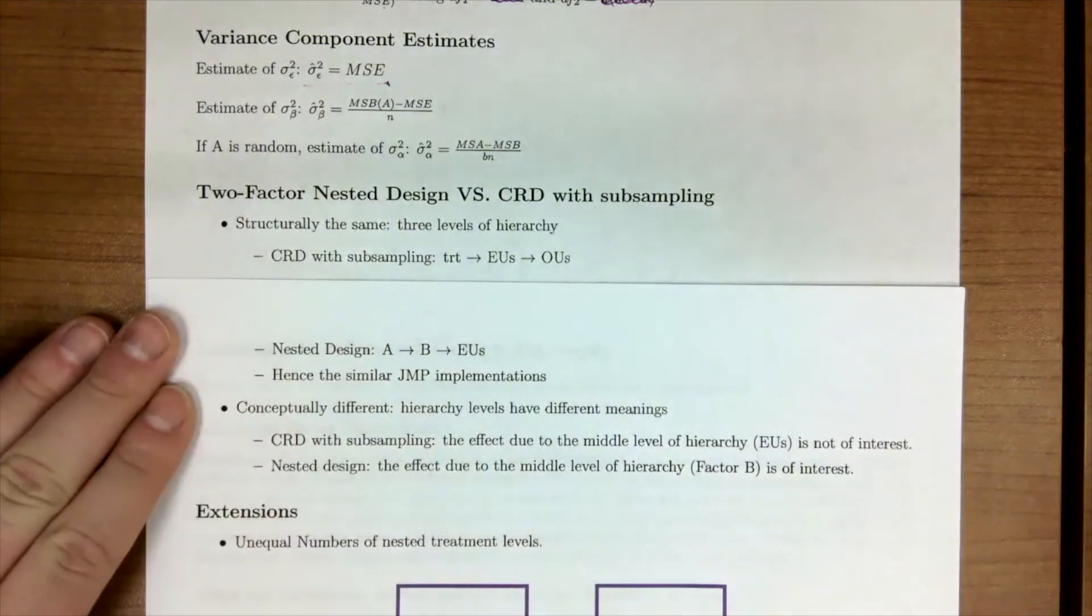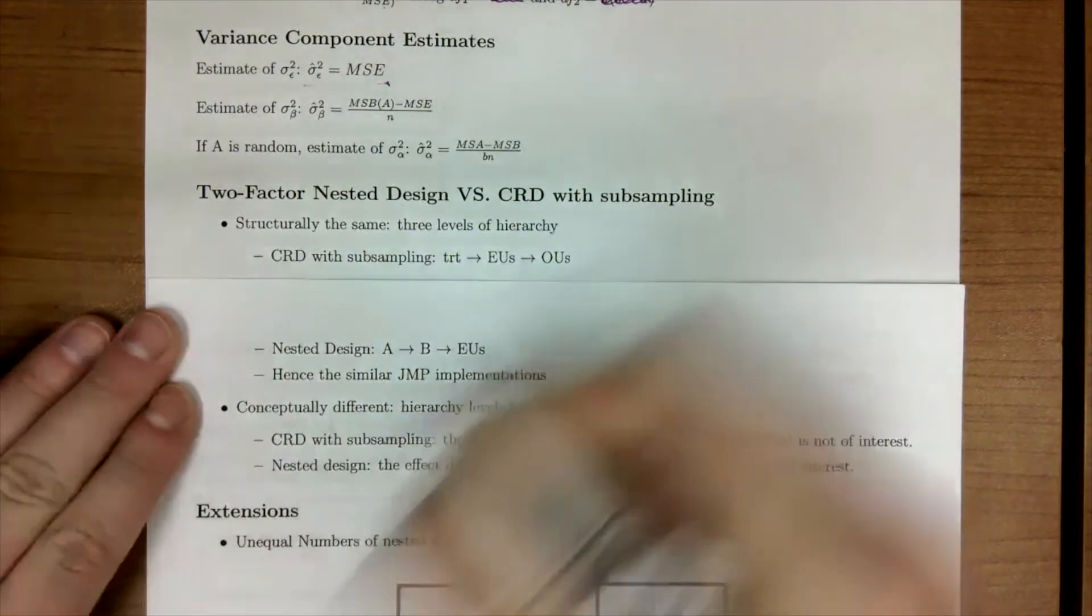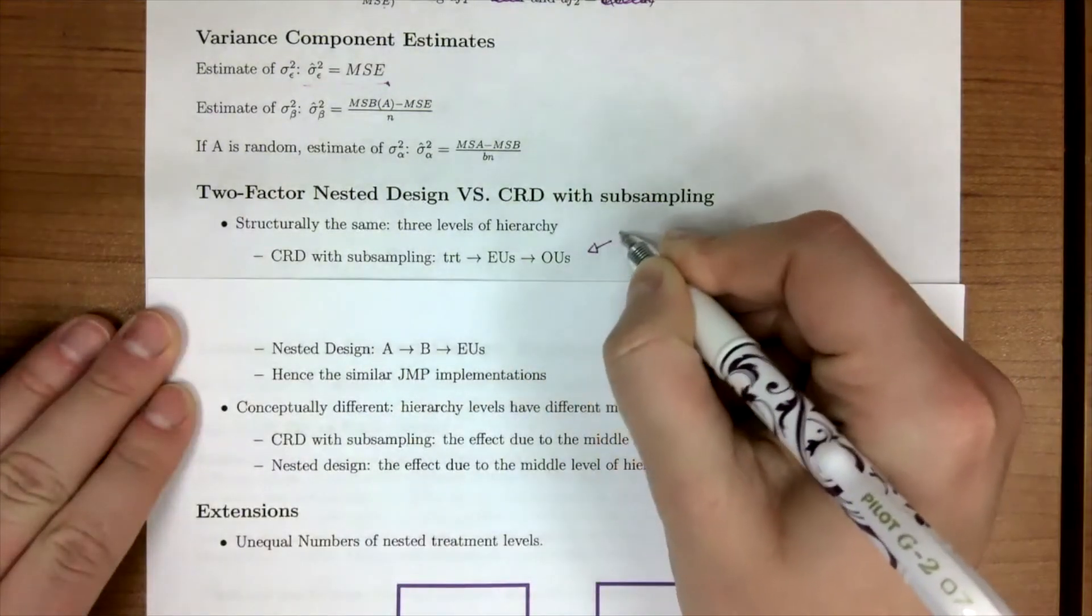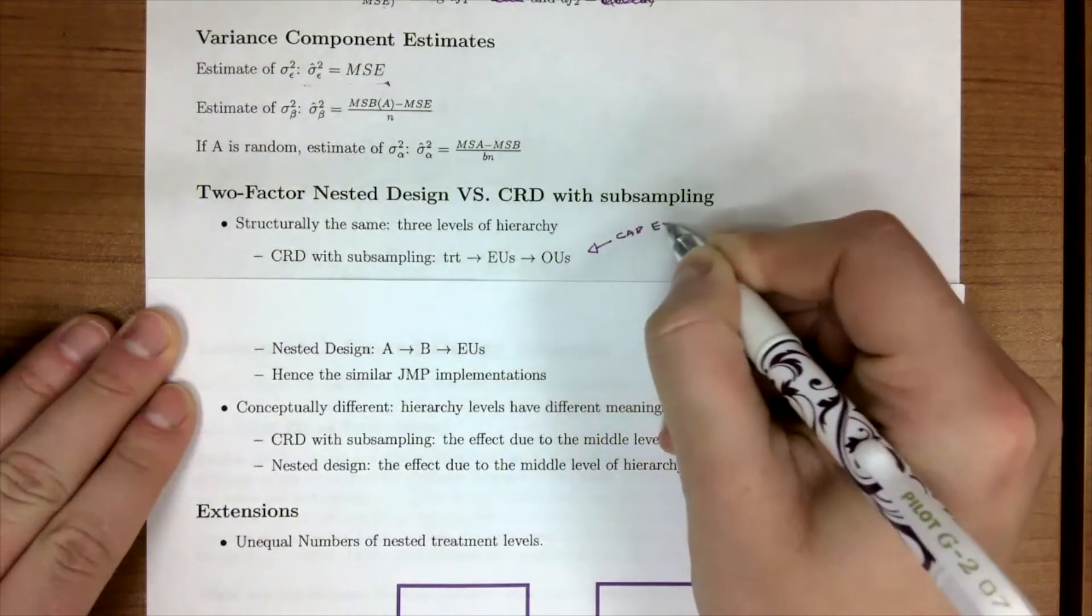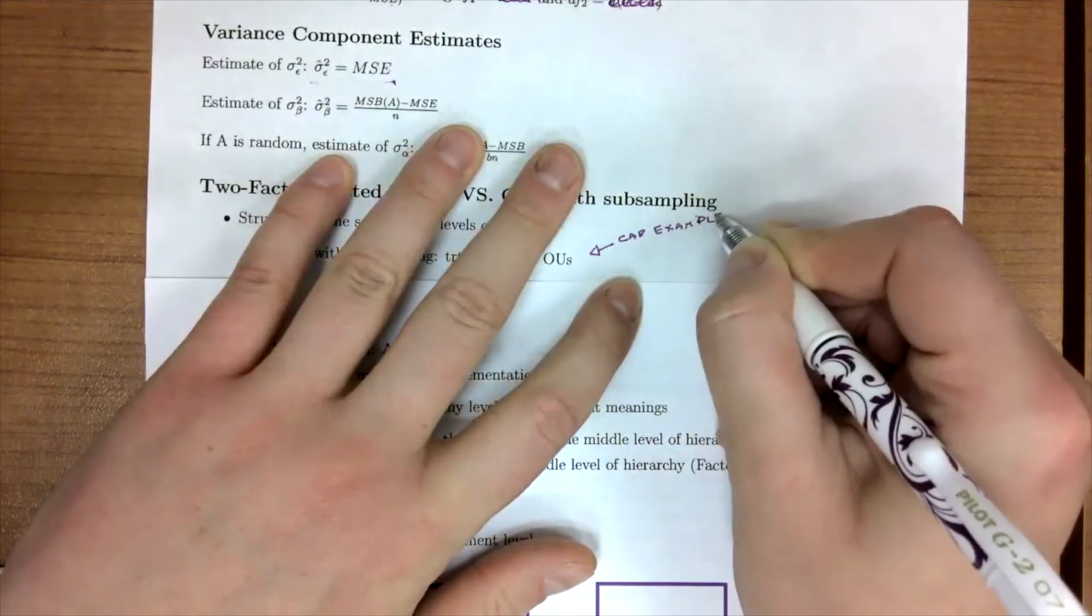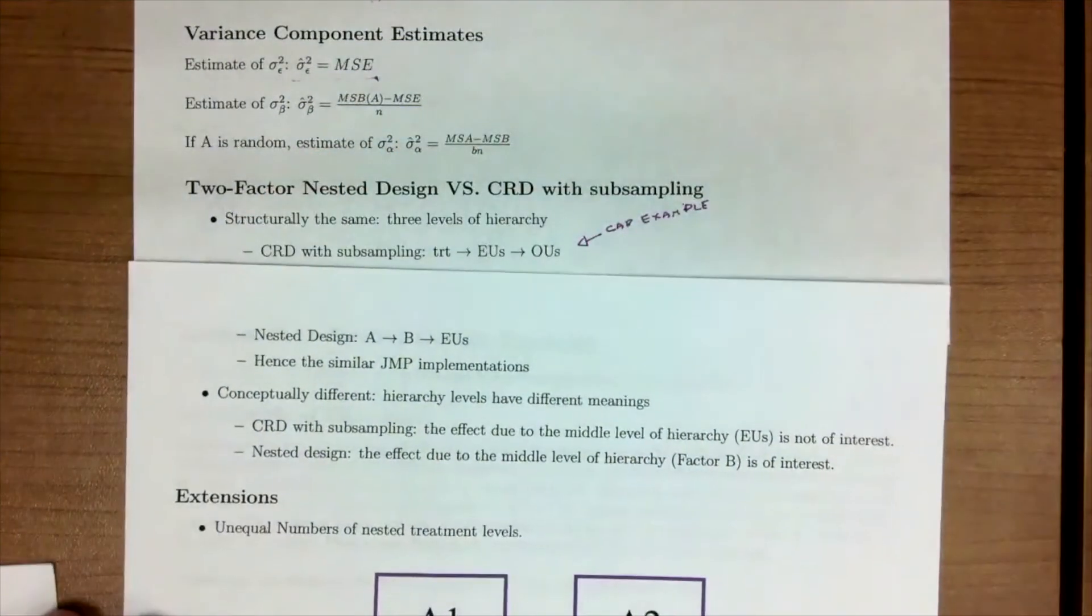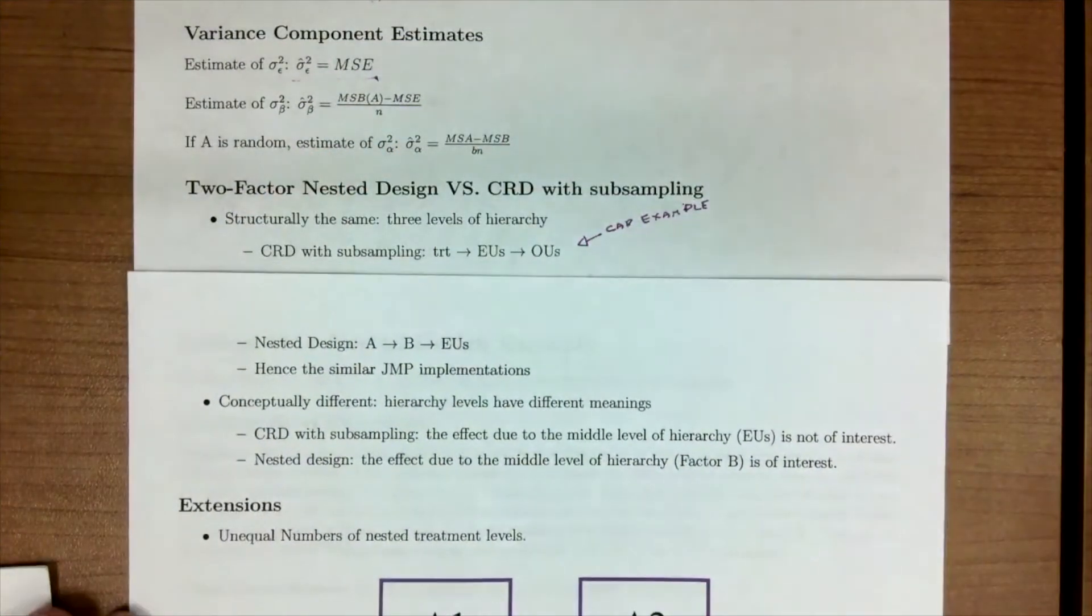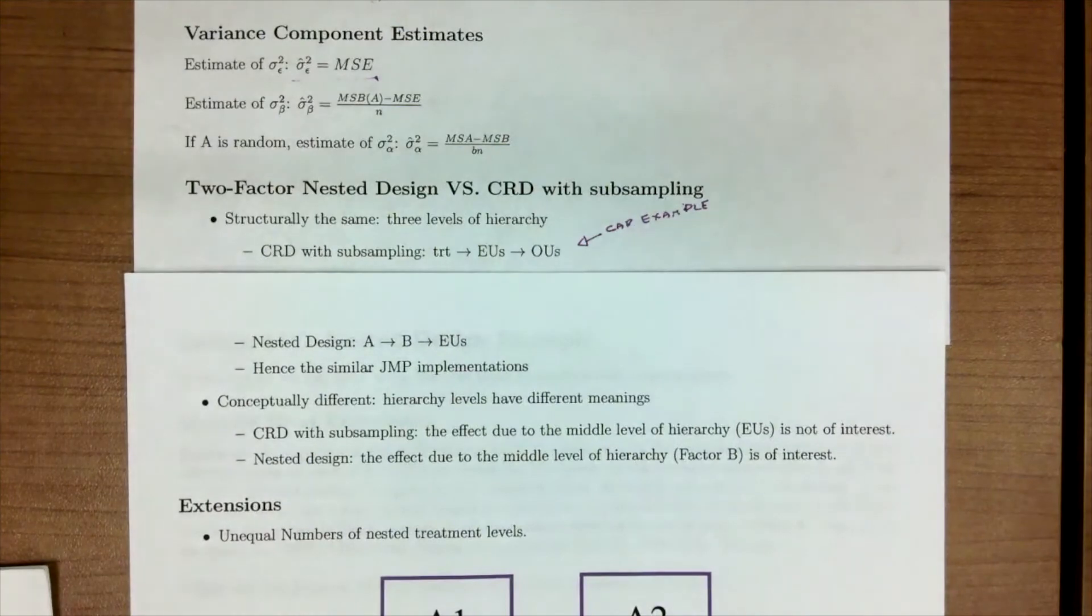If we recall when we were talking about subsampling a little bit before the midterm, we had a car example. And then we have our nested design. So when you implement these into JMP or R, it's going to be similar to what we've already seen. But conceptually, they're going to be very different.